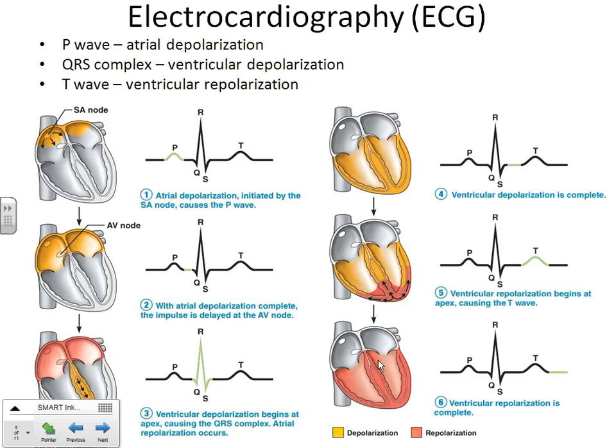When they do this, you get a repeating pattern — you always get this same little pattern repeating over and over again. First you get one small wave, then you get a more complicated wave that has three parts to it, then another small wave. That whole pattern represents one entire cardiac cycle — your entire heart is going to beat and relax within each one of those. We give them names: we call the first wave the P wave, then we have the QRS complex, and then the T wave.